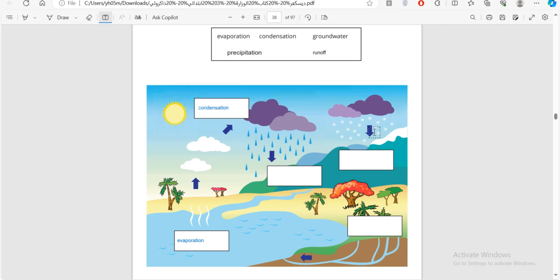Now, the water is falling, or the snow is falling. So is it groundwater, is it precipitation, or runoff? Well, this is precipitation.